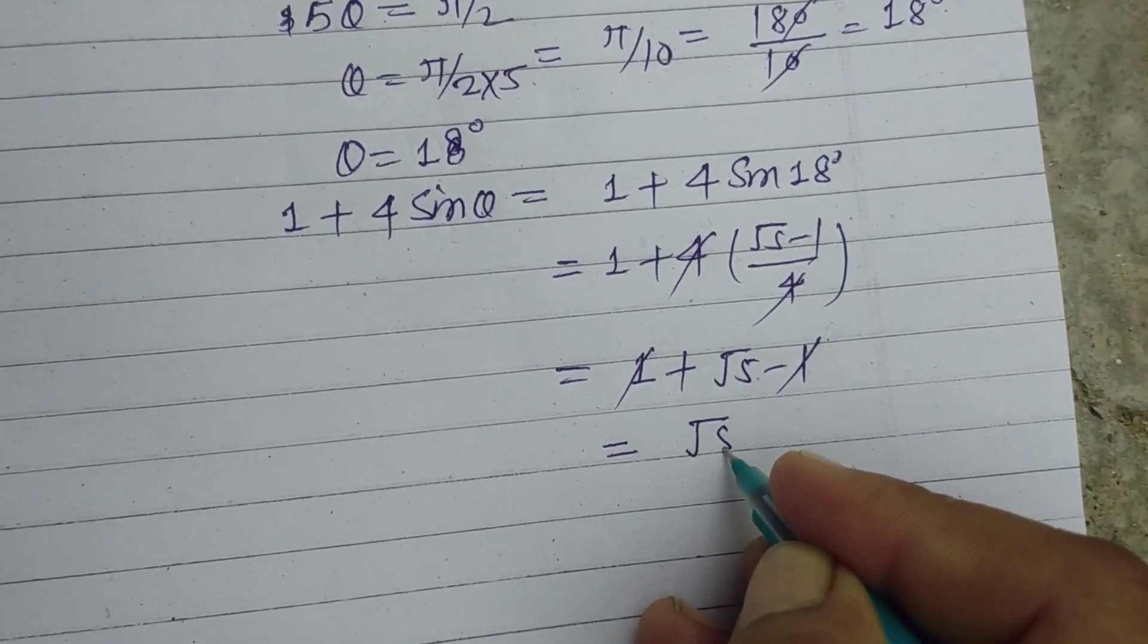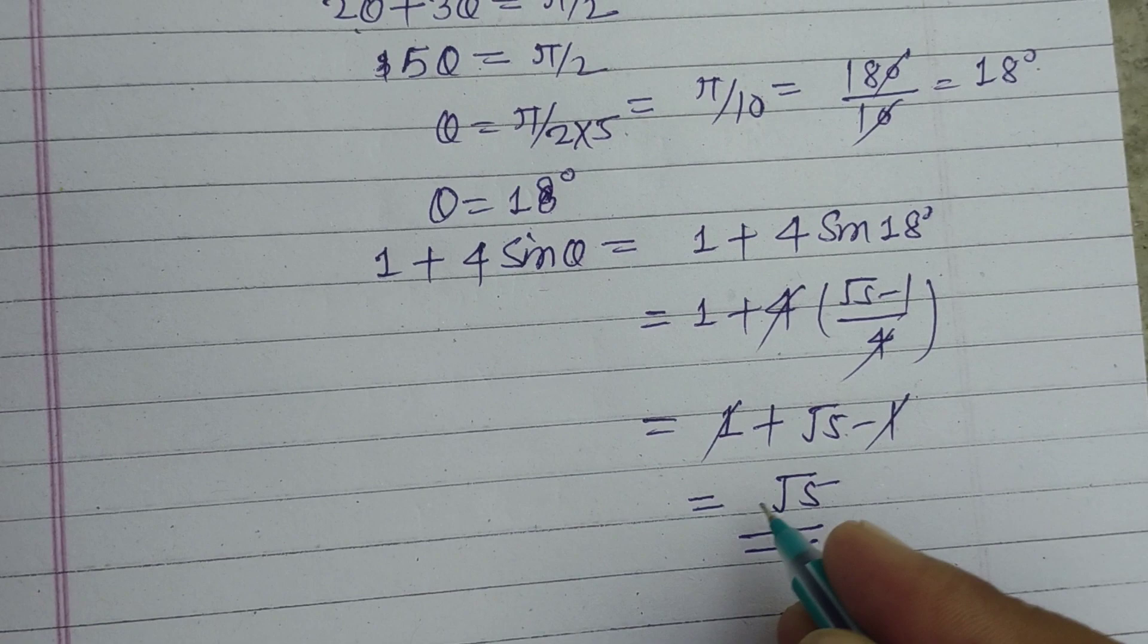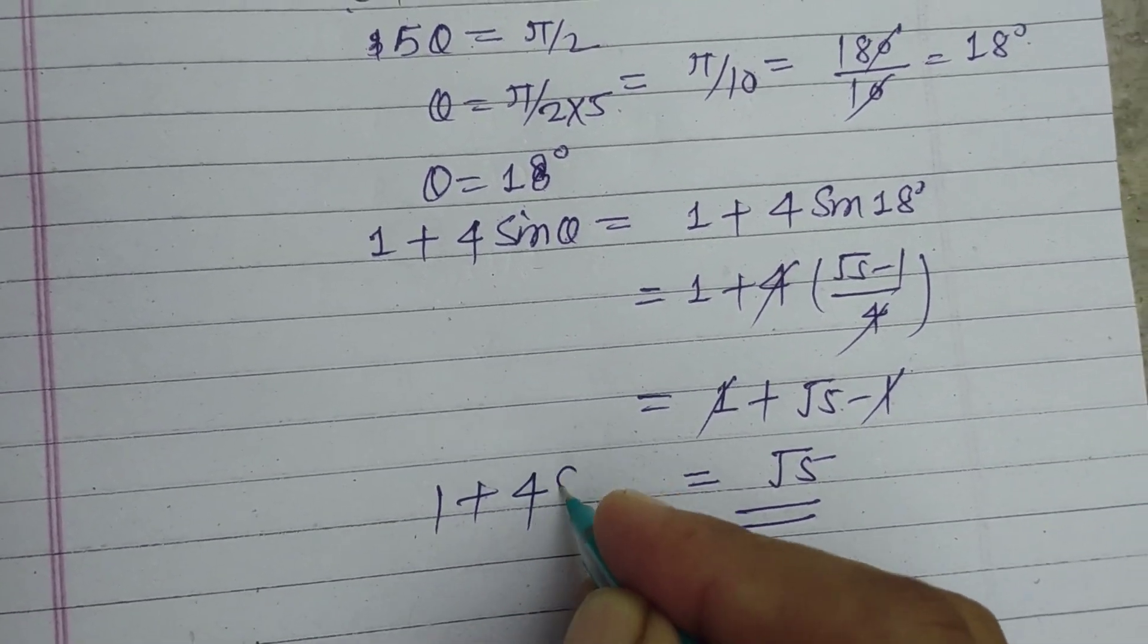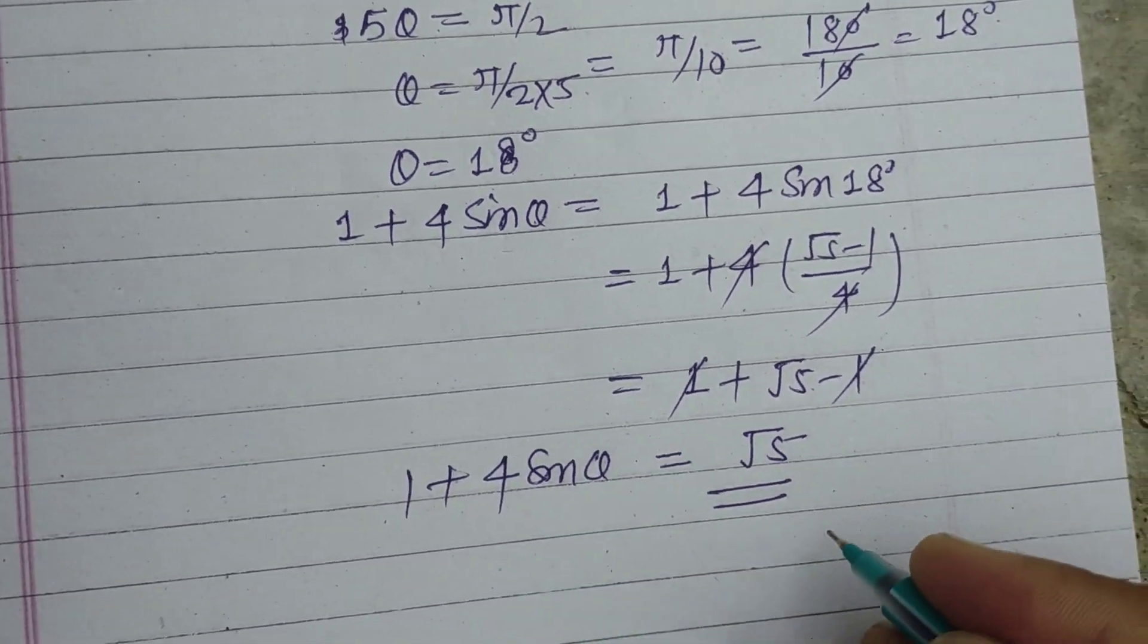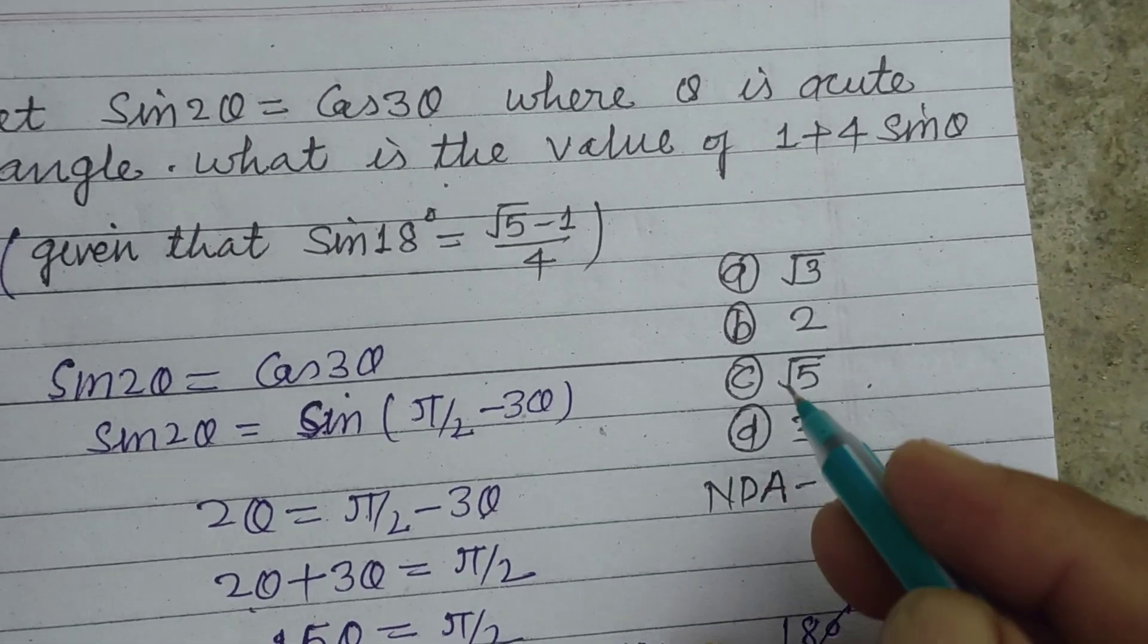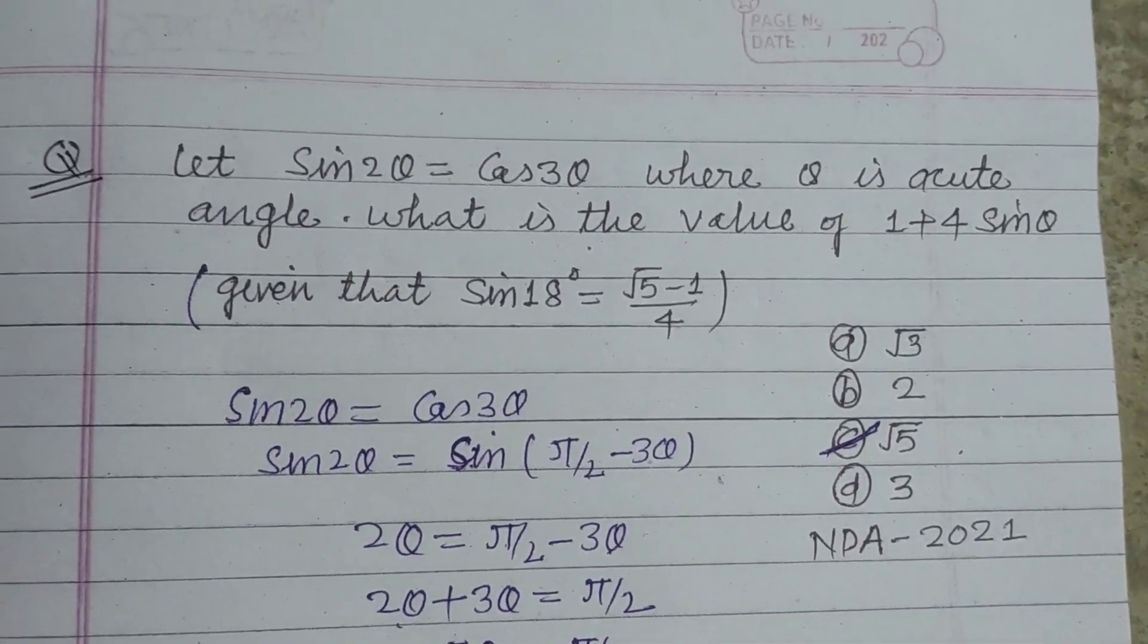Minus 1 plus 1 cancel, so we get root 5. So value of 1 plus 4 sin θ is root 5, which is found in option C. Therefore option C of this question is correct.